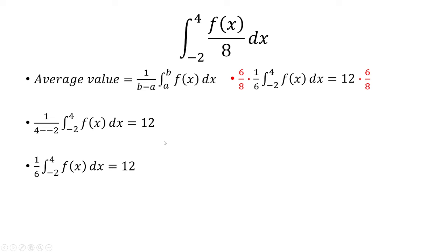So we have 6 eighths times both sides. 6 eighths you can think of also as 3 fourths. So when I multiply the left here, the 6 would cancel, and I'm left with 1 eighth.